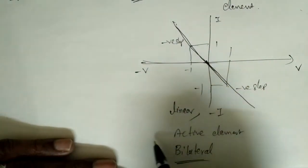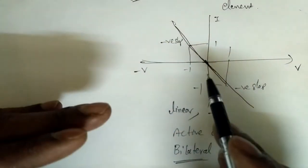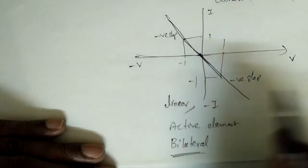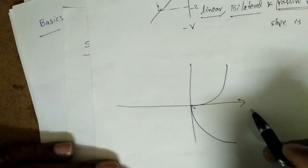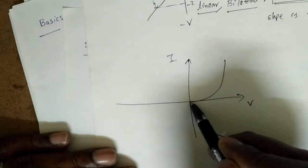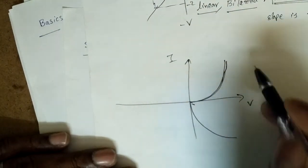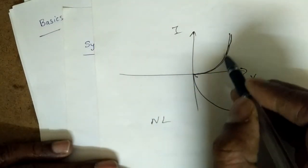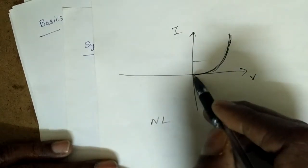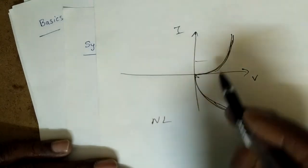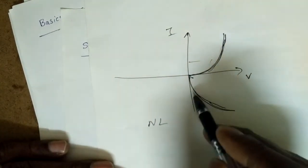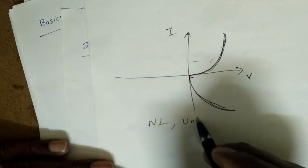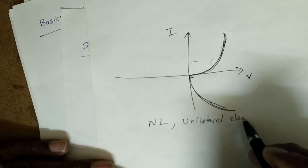Note: we only discuss time variant or invariant when time information is given. Another example — a curved IV characteristic: not passing through origin, not a straight line, so non-linear. The slope is positive in one region (passive) and negative in another (active), so we cannot say definitively. It is a unilateral element: non-linear and unilateral.